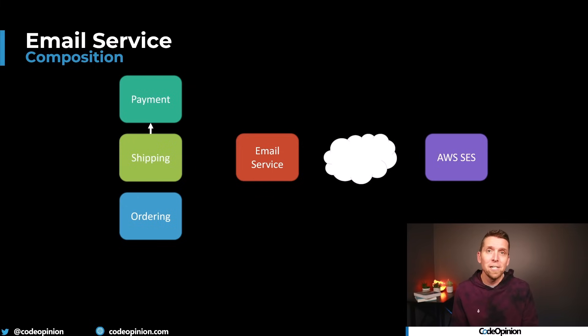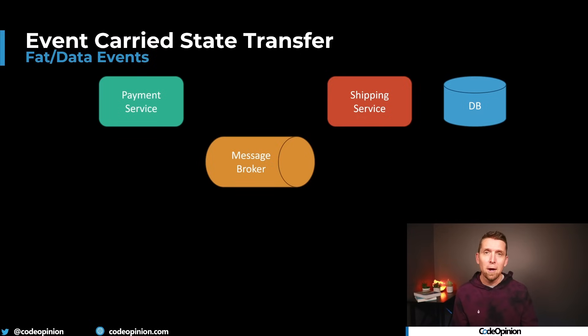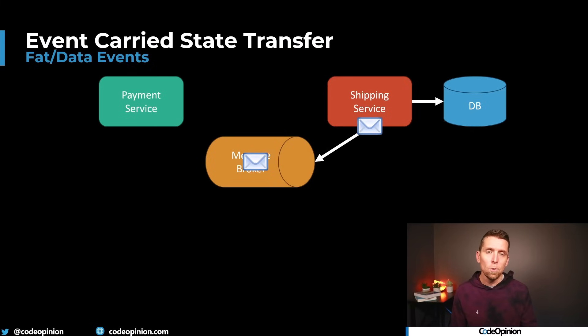Another option, which I also don't love, is using event carried state transfer to move data around so you have a local cached copy. For example, in the shipping service, when you need to compose that email for when an order was shipped, you have all the data and don't need to reach out to other services. When payment information was processed, you publish that billing event, and the shipping service consumes it and stores a local cached copy. You're going to be coupled somehow — either you lose the temporal aspect with event carried state transfer, or you deal with temporal coupling and everything needing to be available.